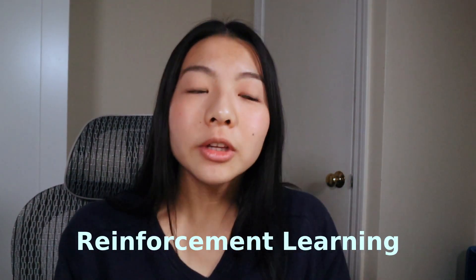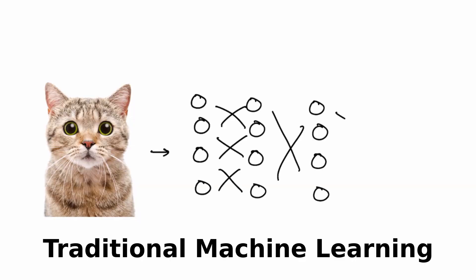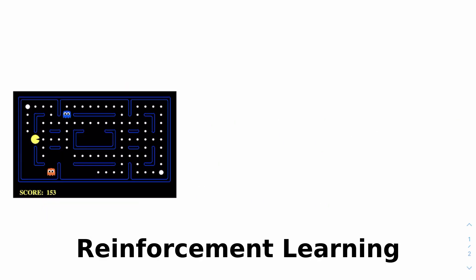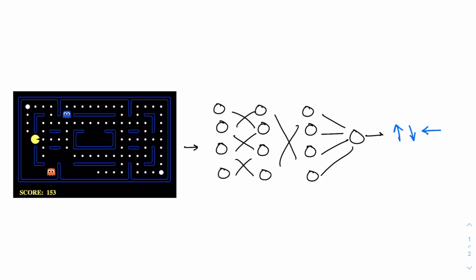Let's dive into counterfactual regret minimization. We're now in a domain of computer science called reinforcement learning. The goal here is to get a computer — some sort of agent — to learn what actions to take in a given environment based on what rewards or penalties they might have seen. Unlike traditional machine learning where you might put a picture of a cat through a classifier and spit out a label, in reinforcement learning we don't actually know what the labels are — we don't know what actions to take. That's what the computer is supposed to figure out.